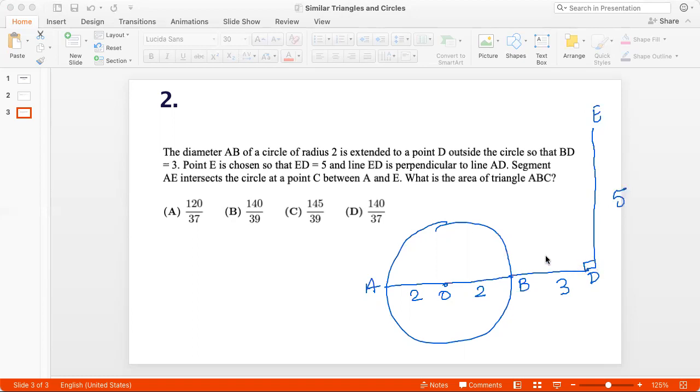Segment AE intersects the circle at point C. So let's say this is A, so this is point C. What is the area of triangle ABC? This triangle, what is the area of this triangle? Now I know that this angle will be 90 degrees because angle in a semicircle is 90 degrees. And so I again see that triangle ACB is similar to triangle ADE because angle A is common and angle ACB and angle ADE are both 90 degrees.